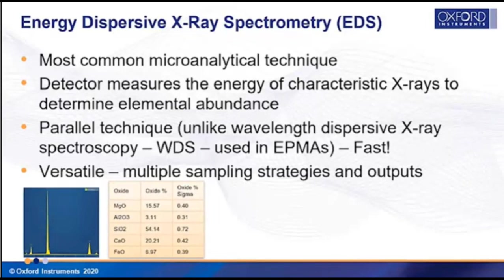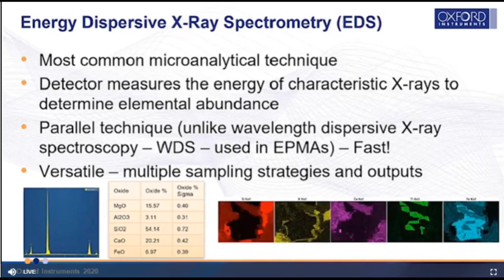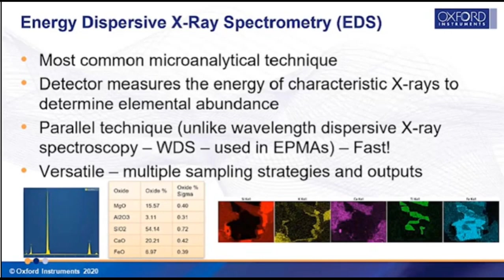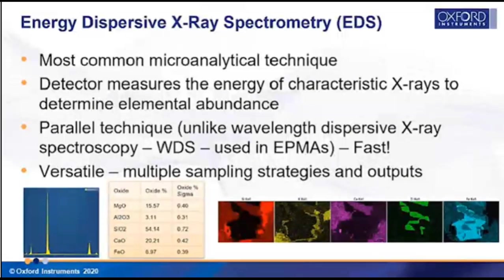Most commonly EDS is used to scan the beam across the surface of the sample and generate element maps, allowing us to look at the distribution of elements across a large area. These maps can be collected very quickly. We can also combine EDS with imaging techniques to pick out individual features or particles and use an automated particle detection system to characterize those automatically.